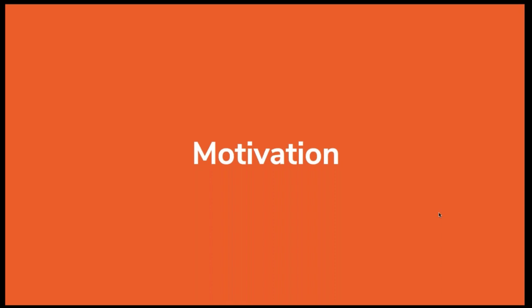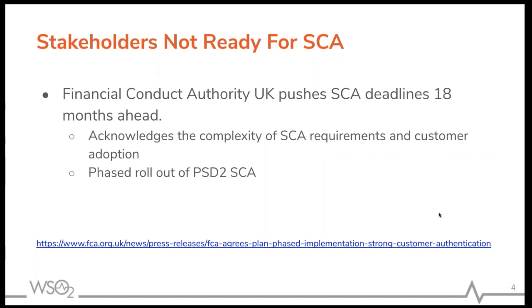The motivation: PSD2 went live on September 14th. The problem was stakeholders were not ready for SCA. The FCA, Financial Conduct Authority of the UK, pushed the SCA deadline 18 months ahead. This was in response to research by the European Banking Association and SMEs saying SCA is not ready yet. They acknowledged the complexity of SCA requirements and customer adoption challenges. What they proposed instead was a phased rollout of PSD2 SCA.